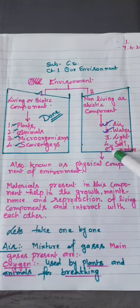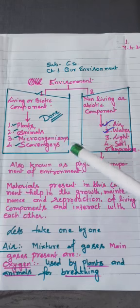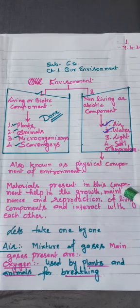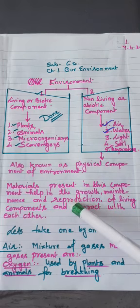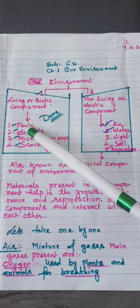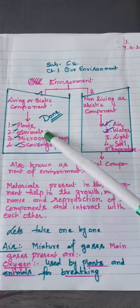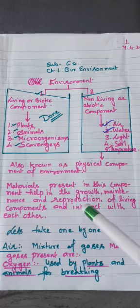These materials help the living component for their growth, maintenance, and reproduction. What is the meaning of reproduction? Reproduction means growing of more plants from a plant or animals from an animal.